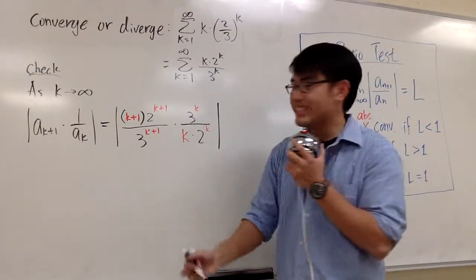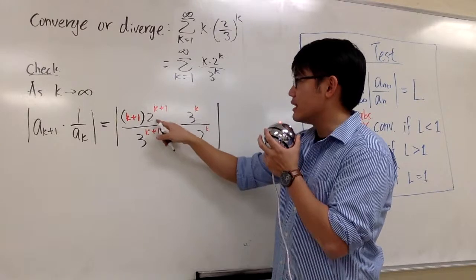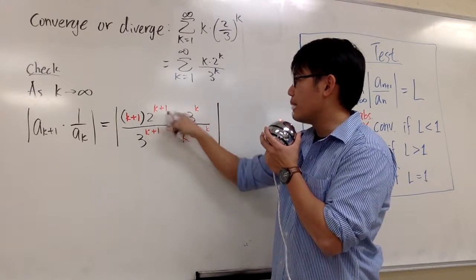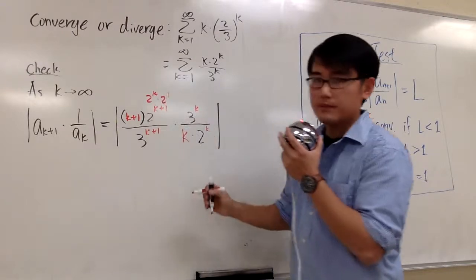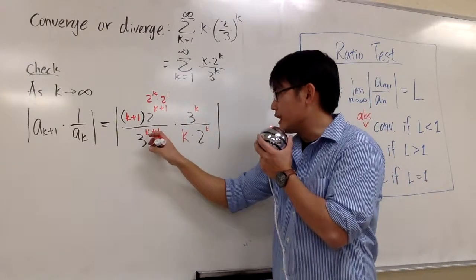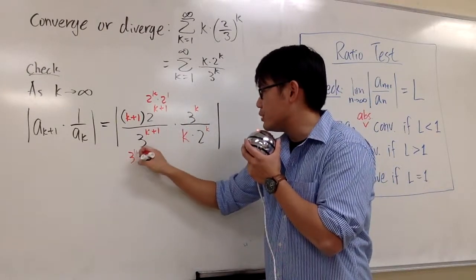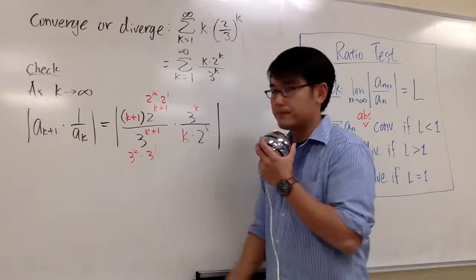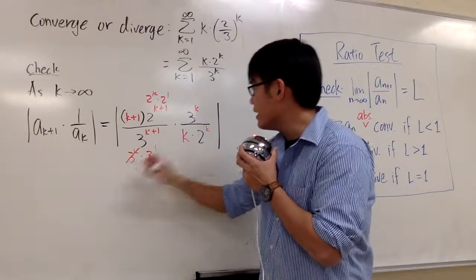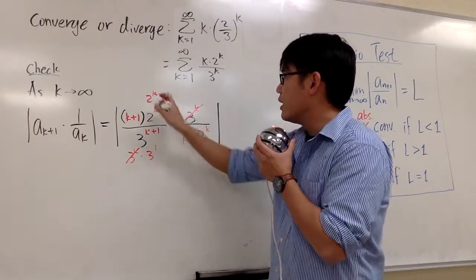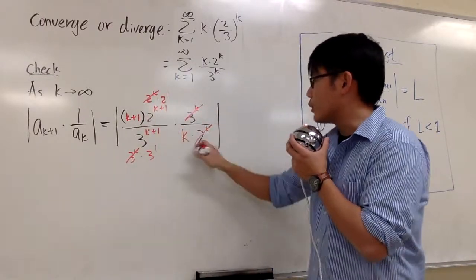And then we are going to do some algebra for this. Especially look at the exponents. For this one, 2 to the k plus 1, we can write that as 2 to the k times 2 to the first. Also, 3 to the k plus 1, we write that as 3 to the k times 3 to the first. And when we do that, we can cancel this 3 to the k with this 3 to the k. Also, this 2 to the k cancels with that 2 to the k.